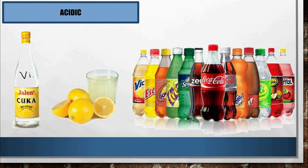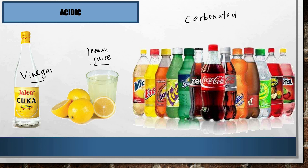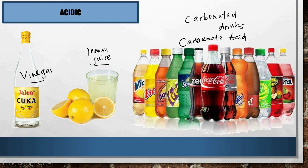Examples of acidic substances include vinegar and lemon juice, which are sour and therefore acidic. Carbonated drinks are also acidic — they contain carbonic acid even though they taste sweet. Please reduce drinking carbonated drinks as they can corrode your teeth if consumed too much.